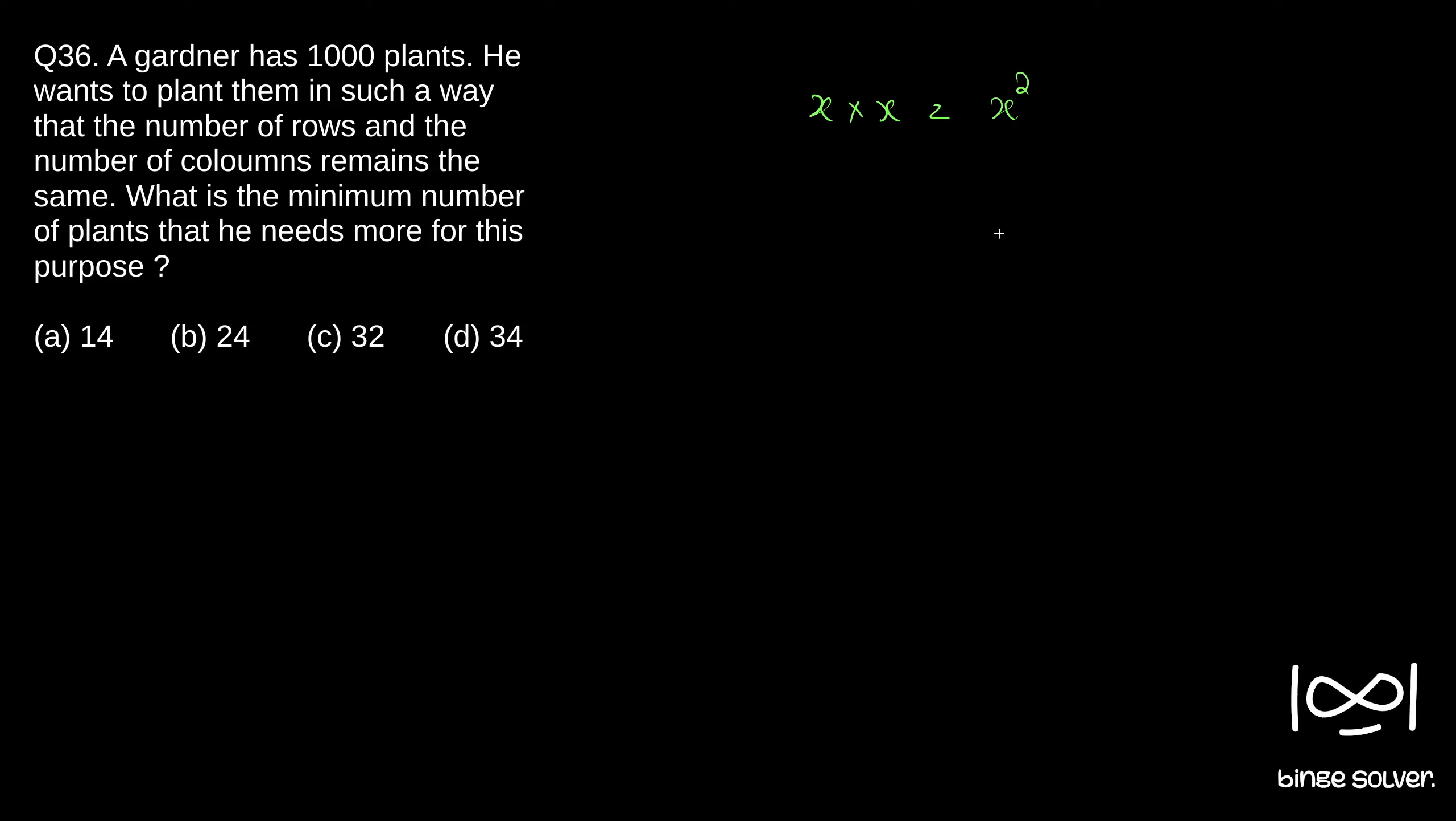So if you see, 32 square, 32 times 32 is 1024.